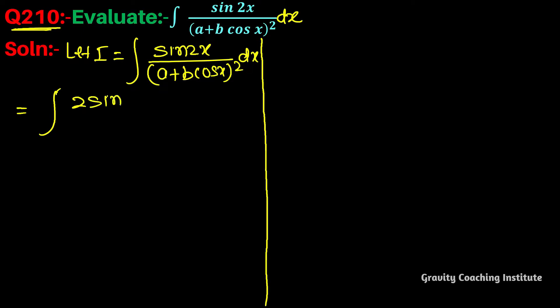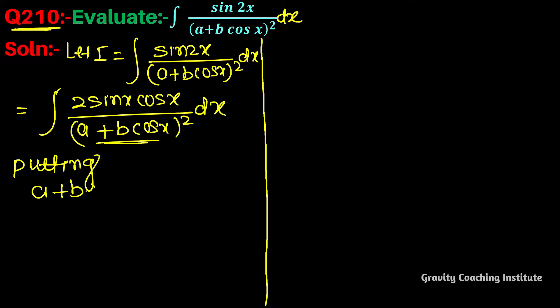equals 2 sin x into cos x upon a plus b cos x whole square. Here we use a plus b cos x to differentiate, so this sin x will be put in: a plus b cos x equal to t. Now differentiate with respect to x: a is constant so it will be 0, and cos x will be minus sin x.